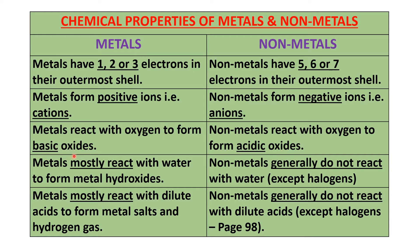Metals react with oxygen to form basic oxides. When you dissolve any metallic oxide in water, you get a hydroxide — for example, sodium oxide dissolved in water gives sodium hydroxide, and potassium oxide gives potassium hydroxide. Non-metals react with oxygen to form acidic oxides, though there are some exceptions in both cases. Not all metals form basic oxides, and not all non-metals form acidic oxides.